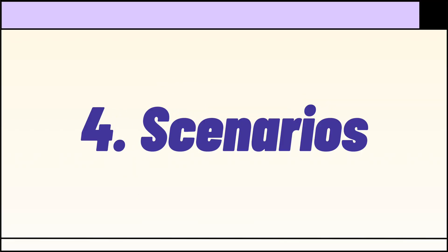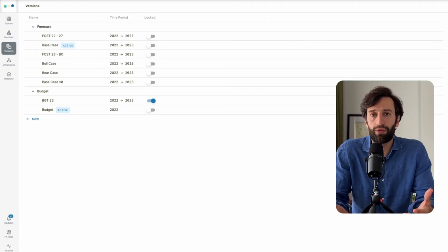Use case number four: scenario planning. Before a company commits to a particular strategy, they'll ask their finance team to come up with a bunch of different scenarios. In Excel, you'd have to duplicate your model several times, change the underlying assumptions in each file, then create another tab to combine all scenarios on a single chart. But in Abicom, when you want to create a new scenario, you simply create a new version of your model.